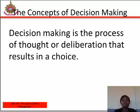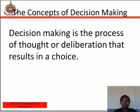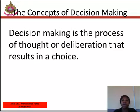A wrong decision at a particular stage in the production process can lead to the total collapse of a farm business. So the success of any farm manager depends to a large extent on the right type of decisions made. There are seven essential steps that must be followed when making decisions in farm management. The first one is to identify the problem.